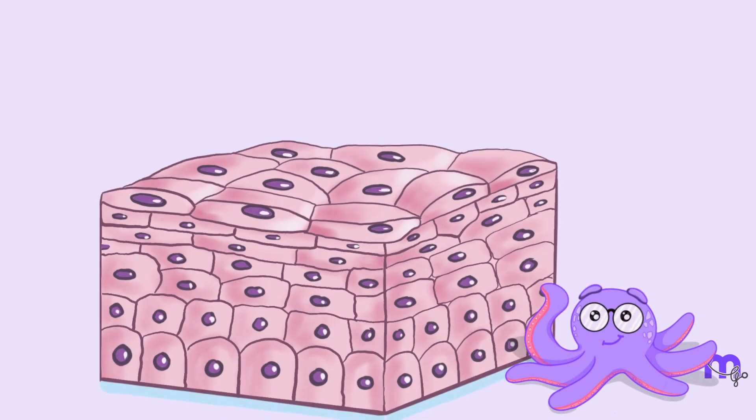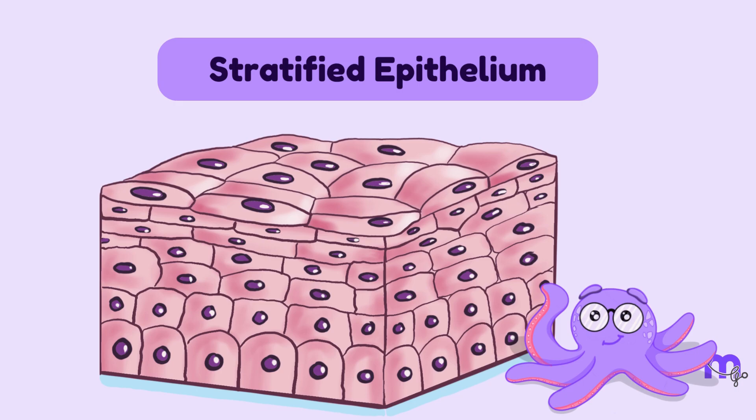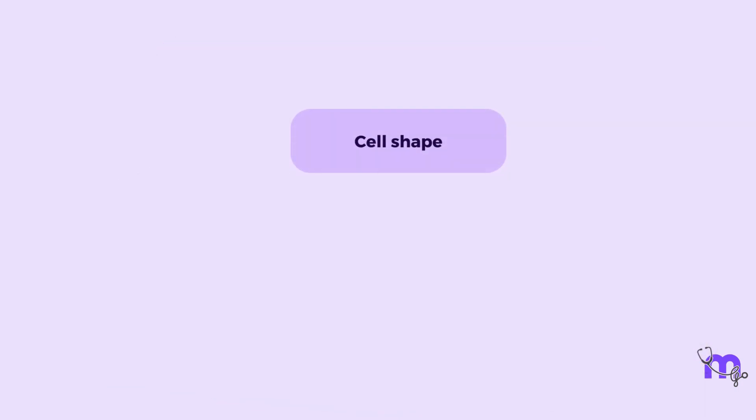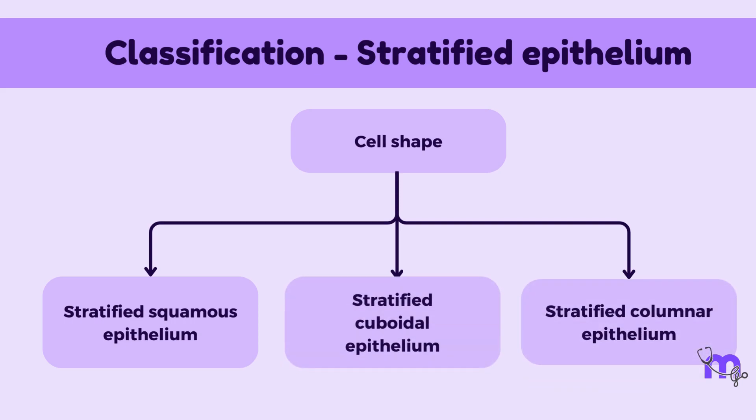A multi-layer of cells is called a stratified epithelium. And again, based on the cell shape, it can be classified as stratified squamous epithelium, which is the most common type, stratified cuboidal epithelium, and stratified columnar epithelium. The second and third types are rarely ever seen in the body.